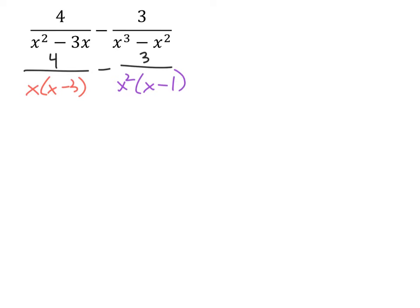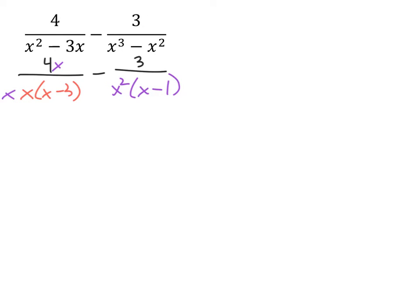We can see from the term on the left, since the term on the right has two x's, and this one only has one, in order to square this, we'll want to multiply the expression by x in both the numerator and denominator.